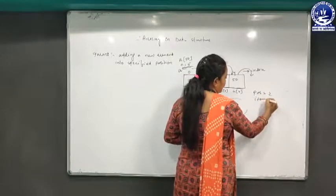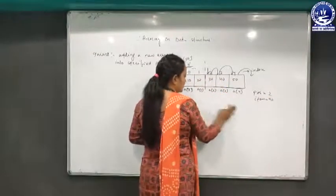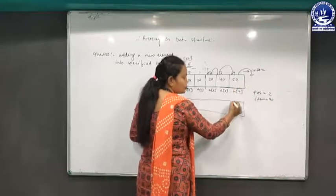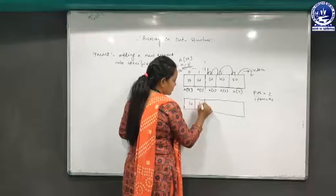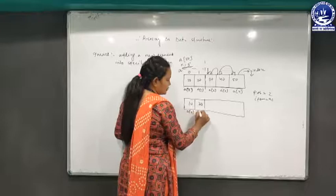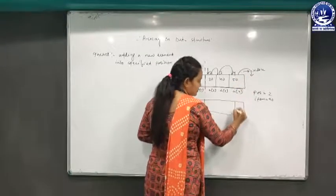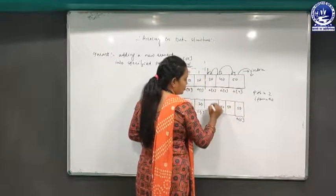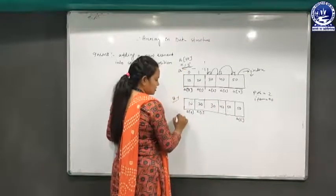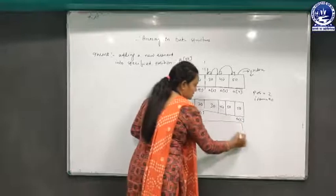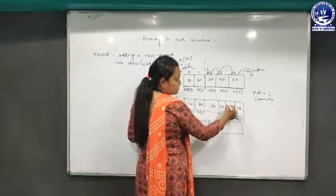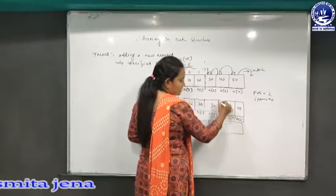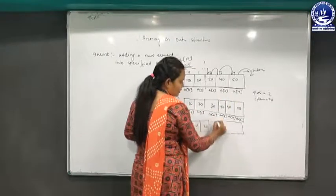With position 2 and item 90 to be inserted, in the first loop iteration the element at index 4 shifts to index 5 — so both a[4] and a[5] contain 50. Elements at indices 0 and 1 (values 10 and 20) remain undisturbed. In the second iteration, the element at a[3] shifts to a[4], so 40 moves from index 3 to index 4.